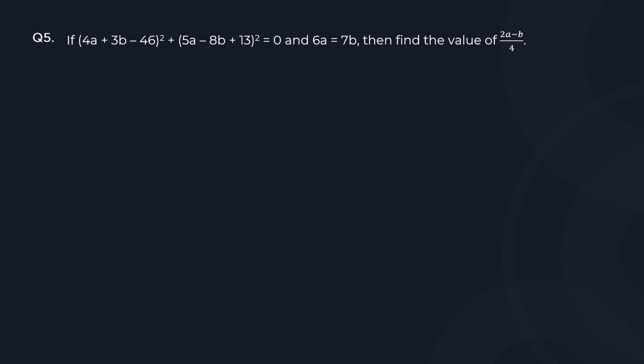You need to observe some simple facts in this. You have a perfect square being added to another perfect square, giving the answer as zero. The only way two perfect squares can add up to become zero, especially when they're all real numbers, is when they are both individually zero.